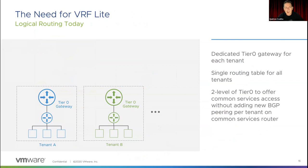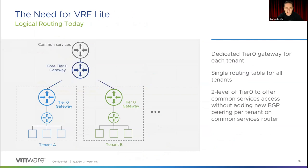The next feature is VRF Lite. If you come from a networking background you'll know VRF Lite — it's the same as VRF in the MPLS world except without MP-BGP and label sharing. Prior to VRF Lite, if you had multiple T0s you could create a distributed T0 architecture for multi-tenancy, or deploy a T0 with a dedicated edge cluster per tenant — so tenant A would have one or two edge nodes and tenant B another two, and so on.